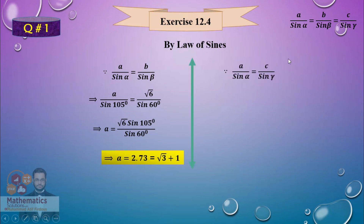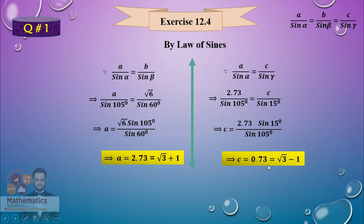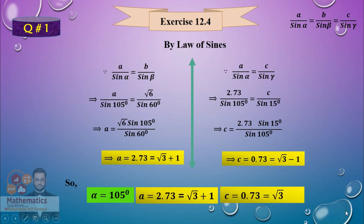By using the Law of Sines again, taking A and C: A/sin α = C/sin γ. Since A is now known, alpha is known, and gamma is known, we substitute all values and cross-multiply. So C = 2.73 × sin15° / sin105°, which gives C = 0.73, or written as √3 − 1. Write the final answers alpha, A, and C in small rectangles for a good presentation.